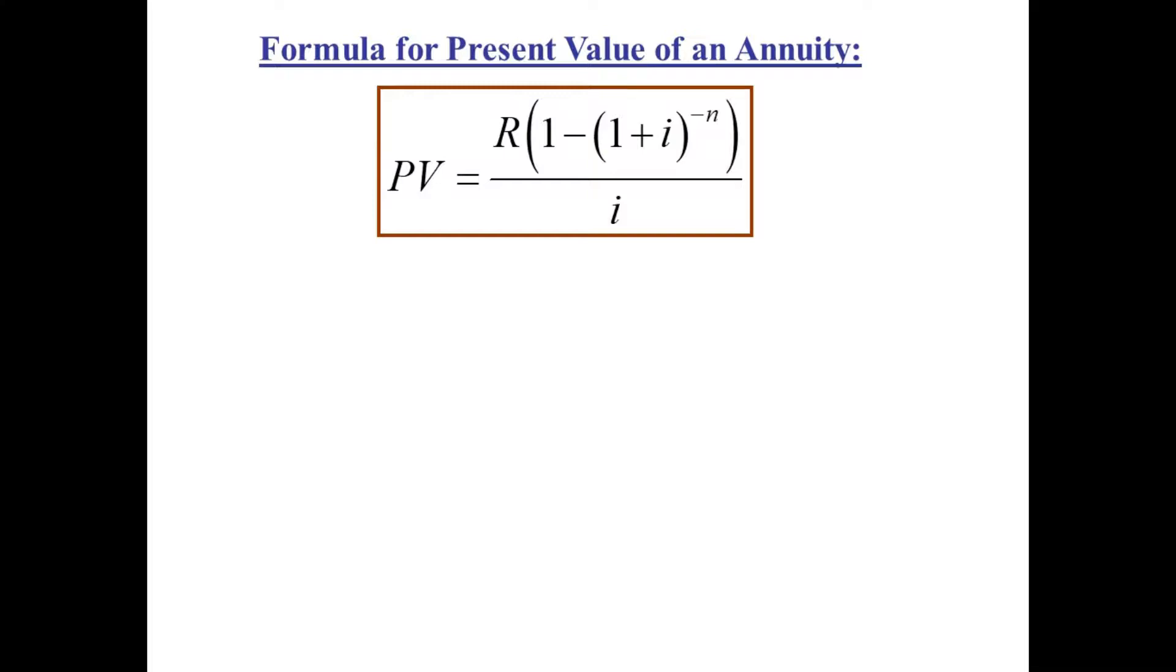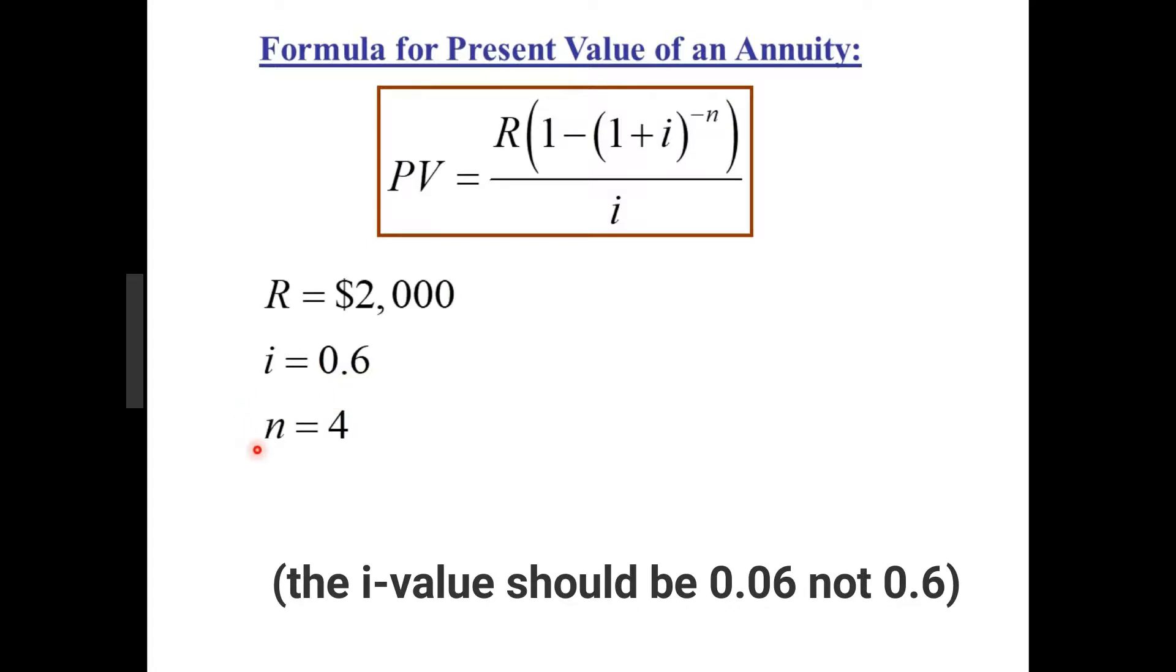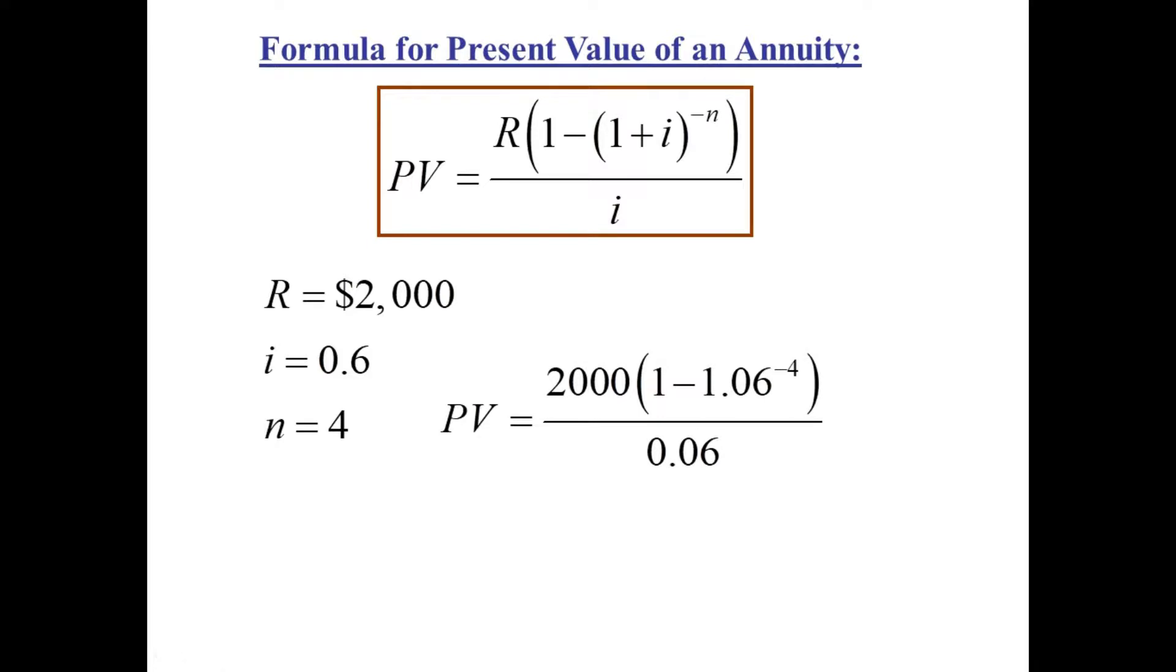And so for our previous example, the four payments of $2,000, R stands for regular payment. I stands for interest rate per compound period. N stands for the number of payments that are made over the annuity. Plug them into the formula and now you must take your calculator and confirm that, yes, the present value is $6,930.21 according to the formula.